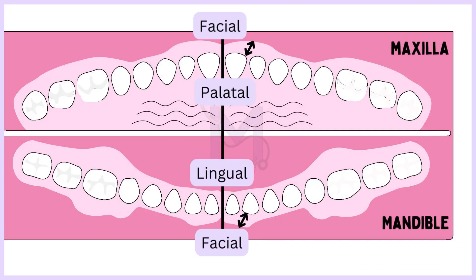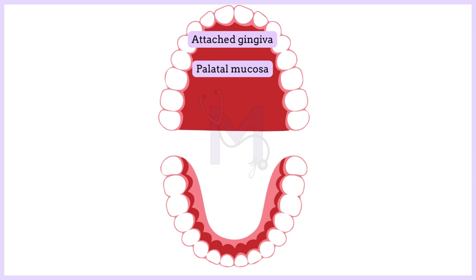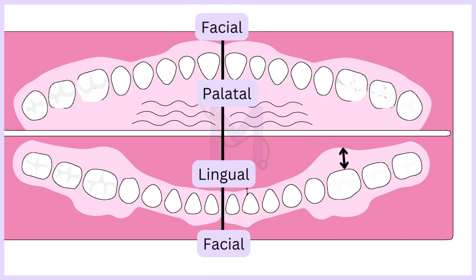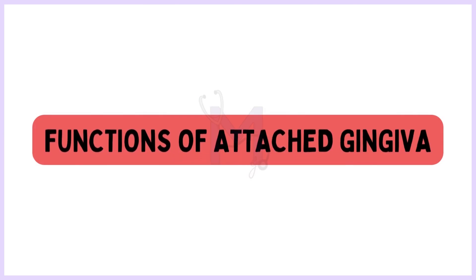The width of the attached gingiva varies in different regions of the mouth. Facially, attached gingiva is the widest in the maxillary and mandibular incisor regions: 3.5 to 4.5 mm in the maxillary and 3.3 to 3.9 mm in the mandibular. It is narrower in the region of the first premolar: 1.9 mm in the maxillary and 1.8 mm in the mandibular area. Palatally, the attached gingiva merges imperceptibly with the equally firm and resilient palatal mucosa with no visible mucogingival line. The lingual gingiva is narrow in the incisor region and wide in the molar region. The width of the attached gingiva increases with age and active eruption of the teeth.